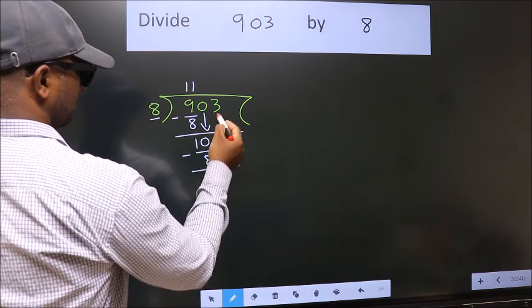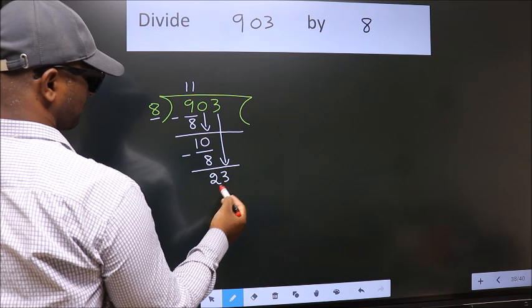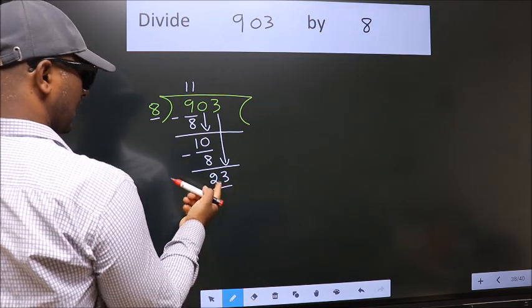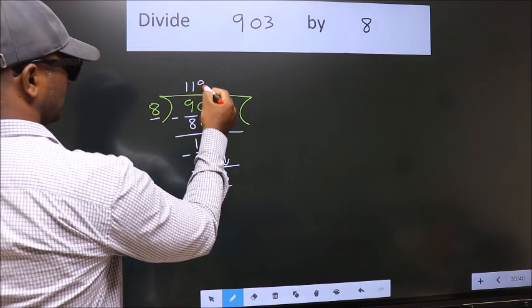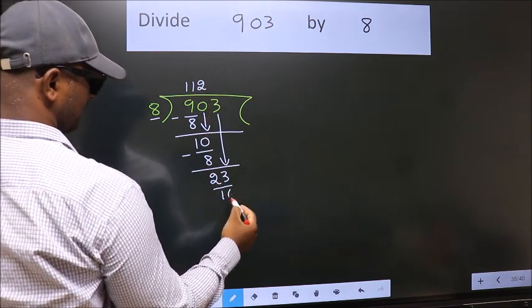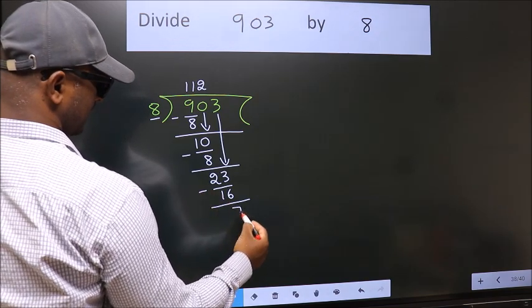After this, bring down the next number. So, 3 down. So, 23. A number close to 23 in the 8 table is 8 times 2 is 16. Now, we subtract and get 7.